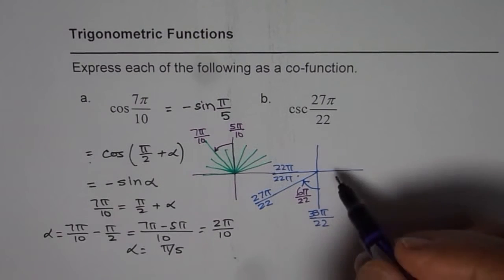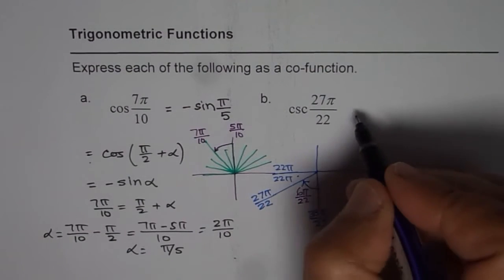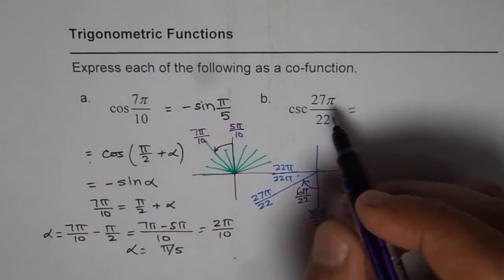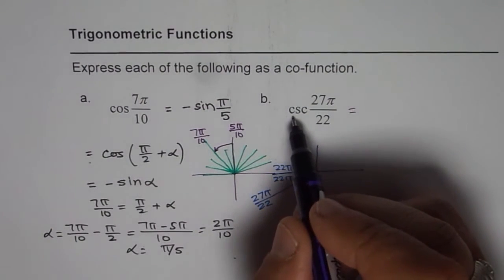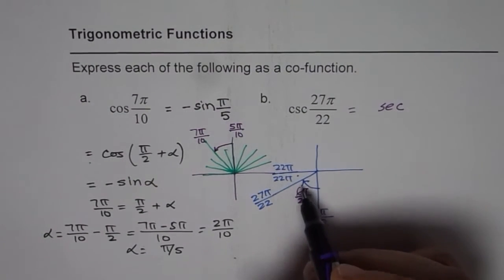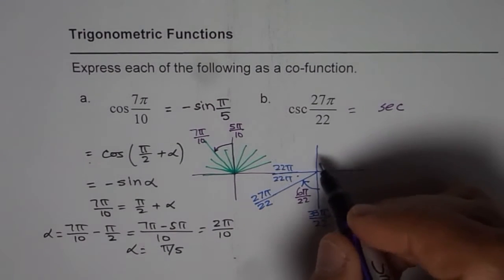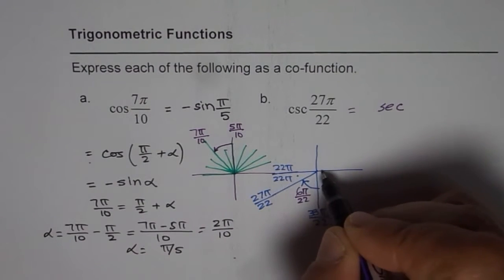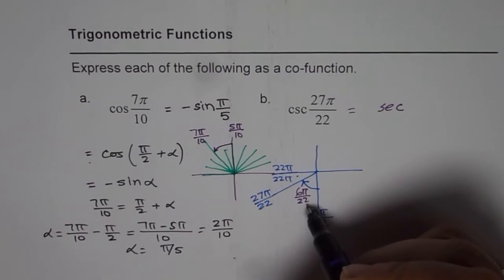So whenever we do co-function π/2 changes the trigonometric ratio into its co-function. The co-function for cosecant is secant. Now both secant and cosecant are negative here. So anyway, what we really get here is secant 6π/22.